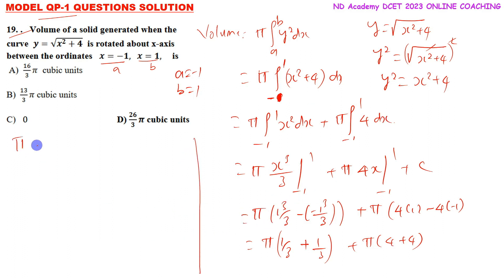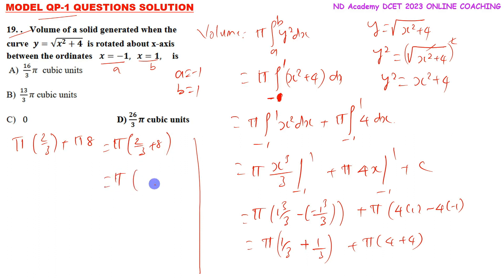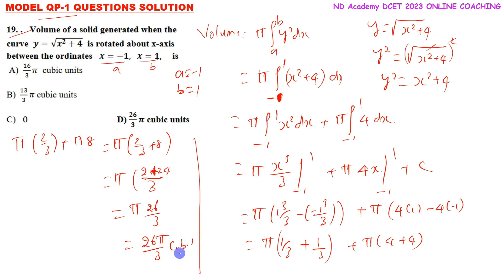Taking pi common: pi times (2 by 3 plus 8). Finding LCM: 2 by 3 plus 24 by 3 equals 26 by 3. So the answer is 26 pi by 3 cubic units. Answer D: 26 pi by 3 cubic units.